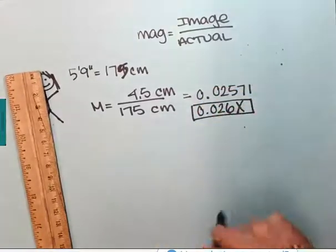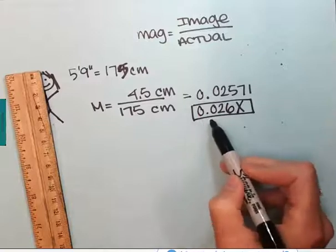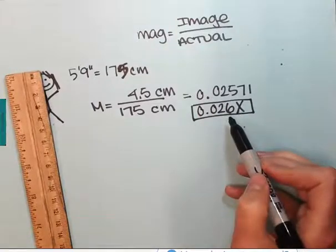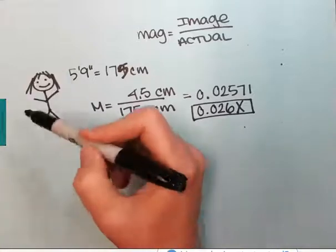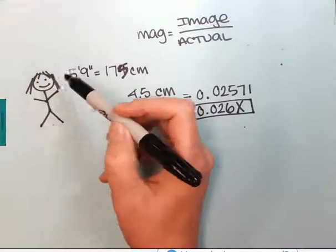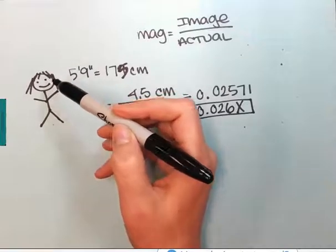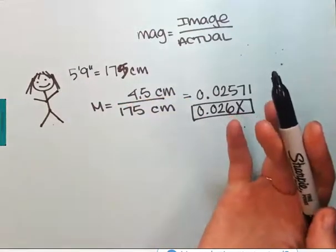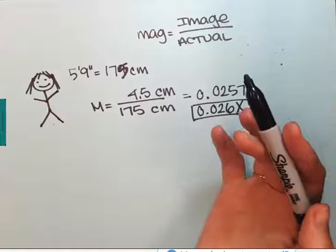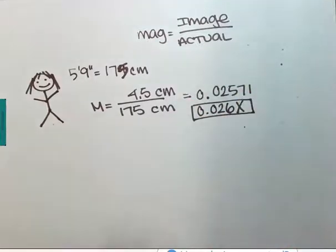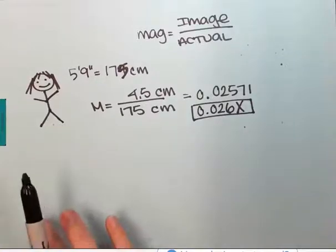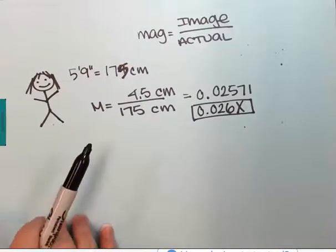Since I only have two significant digits here, I'm going to round that to 0.026x. That would be the magnification. You may notice that this is less than one, but that actually makes sense because in this case my image is much smaller than the actual thing. Always ask yourself those questions: does my answer make sense, what is that actually saying? We're going to look at a couple of other examples of things that you might need to calculate.